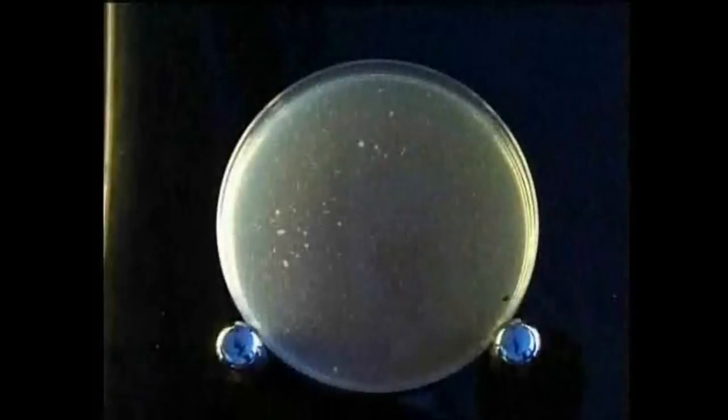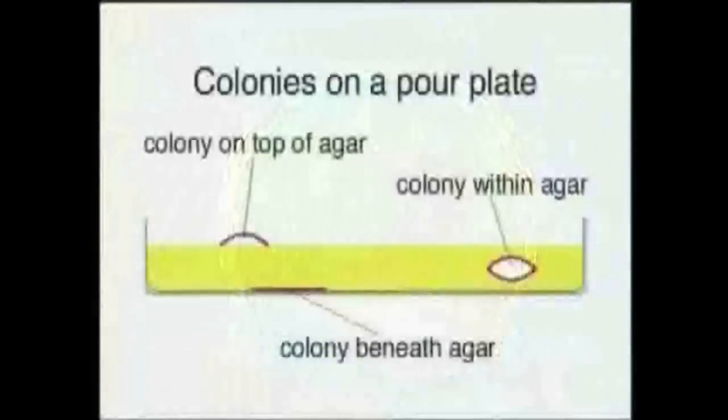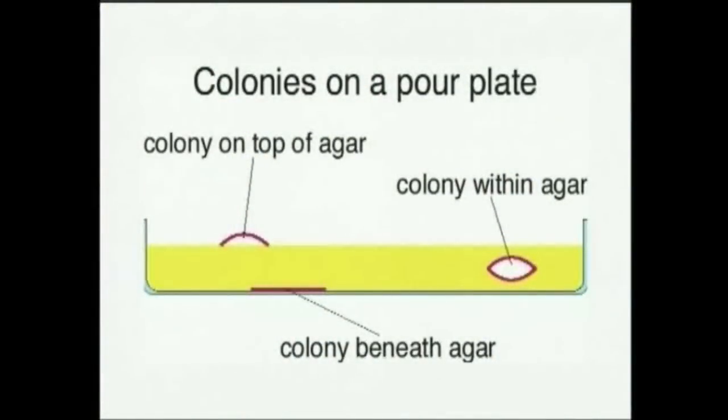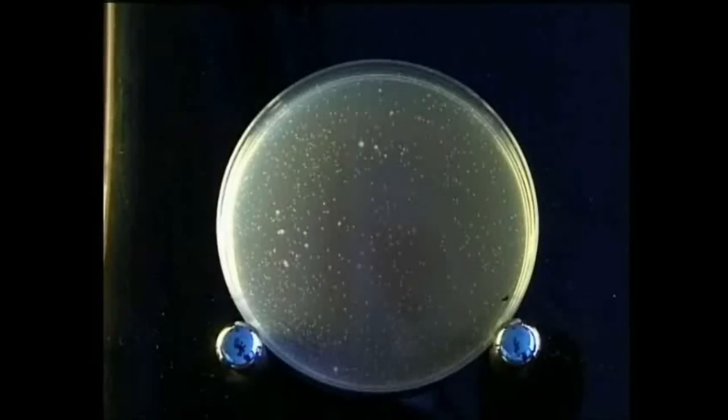Once the medium has set, the plate can be inverted and incubated. Colony growth takes place within the medium and on its top and bottom surfaces as each colony develops from a single cell present in the original inoculum. This method can be used for counting the number of bacteria present in a sample of liquid, as long as you know the dilution factor.